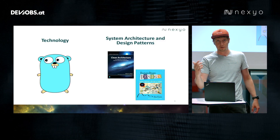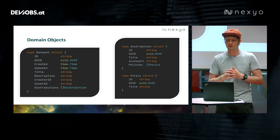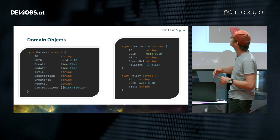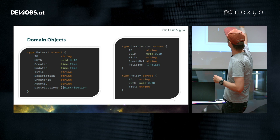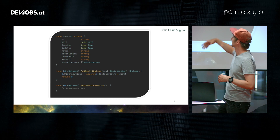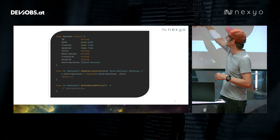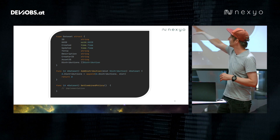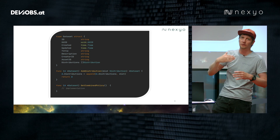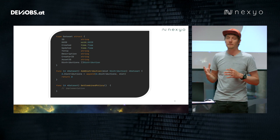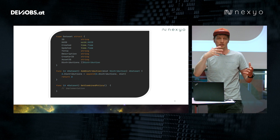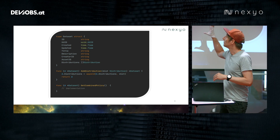Let's start from Domain Driven Design and look at some domain objects. We have a Dataset — we deal with a lot of datasets, as you can imagine. A Dataset has distributions, and a distribution has policies. On these domain objects we then add domain logic — for example, simple methods to add a distribution or get the combined policy. Here you are really modeling your domain, staying very close to the customer. Also note there are no infrastructure details here — nothing about how the database is set up. Only domain.